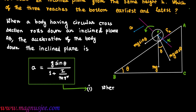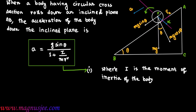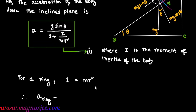Where I is the moment of inertia of the body, and R is the radius of the body.